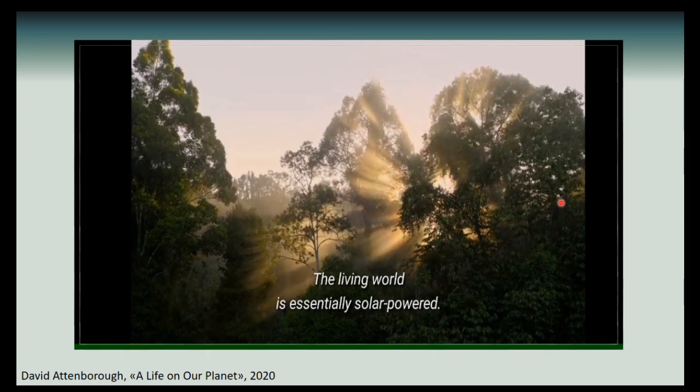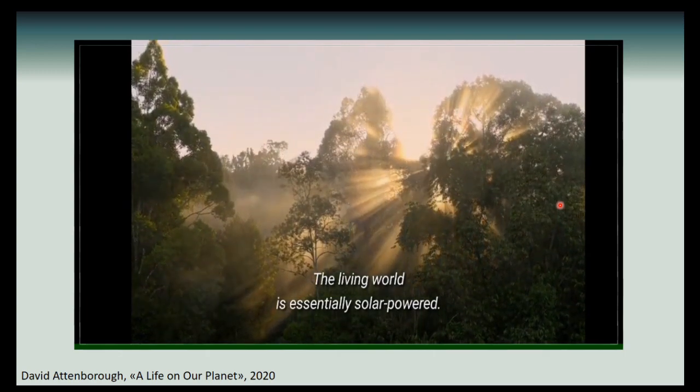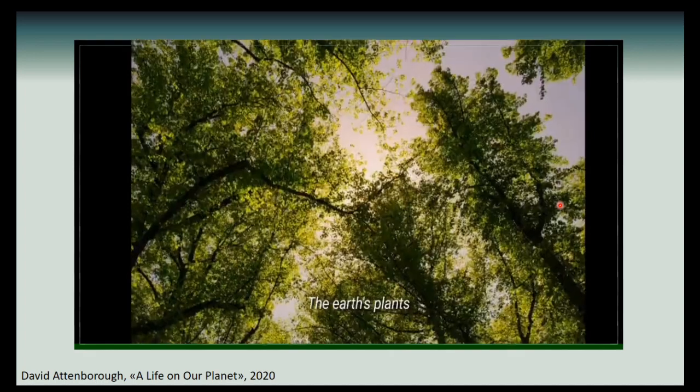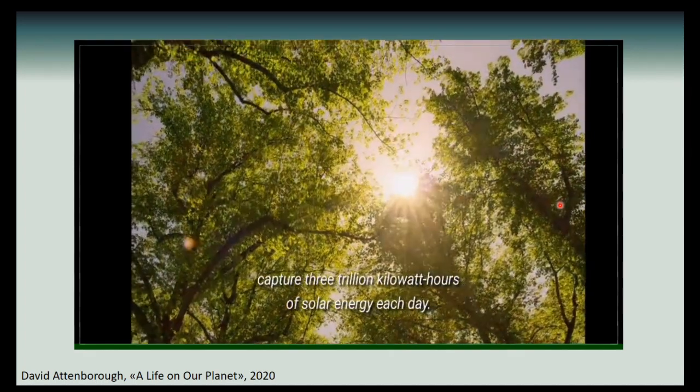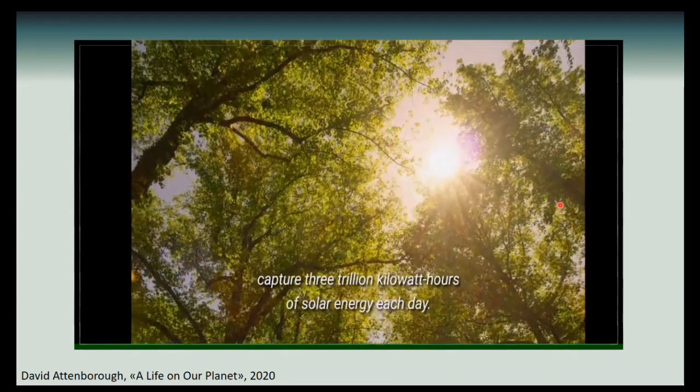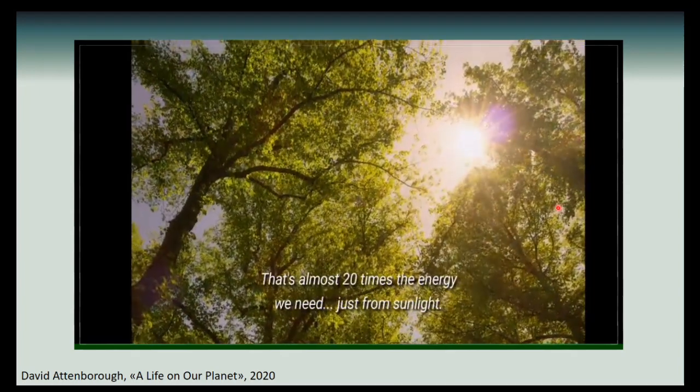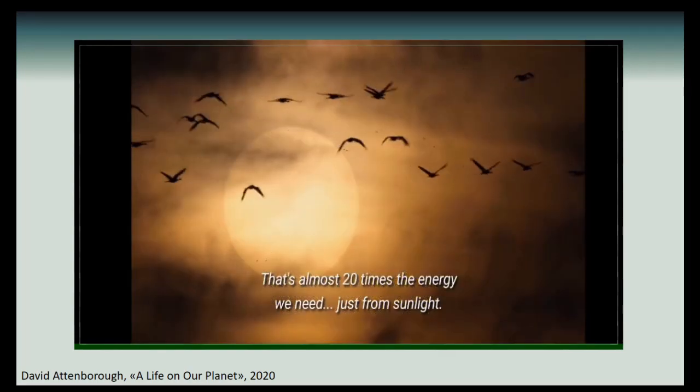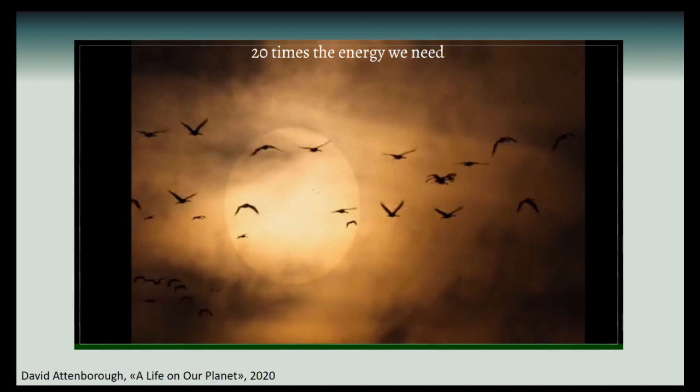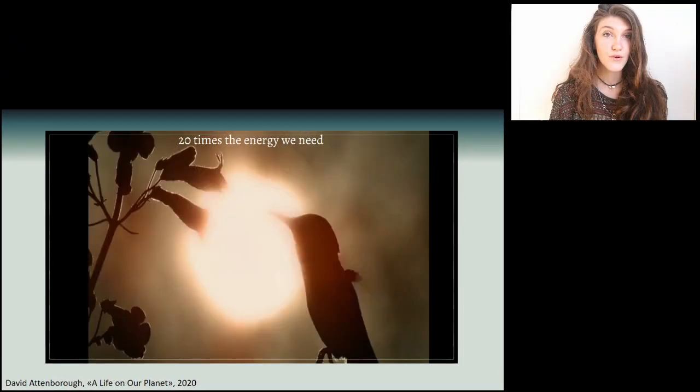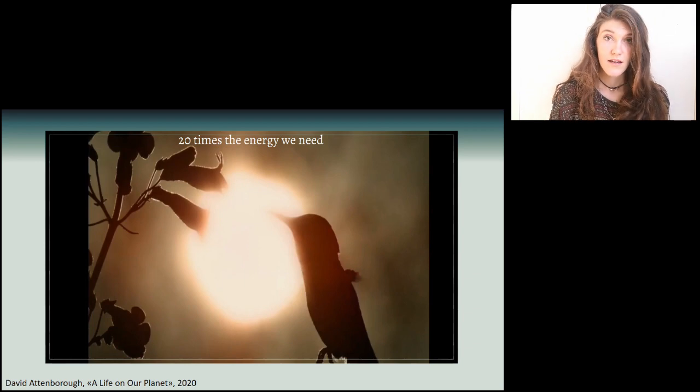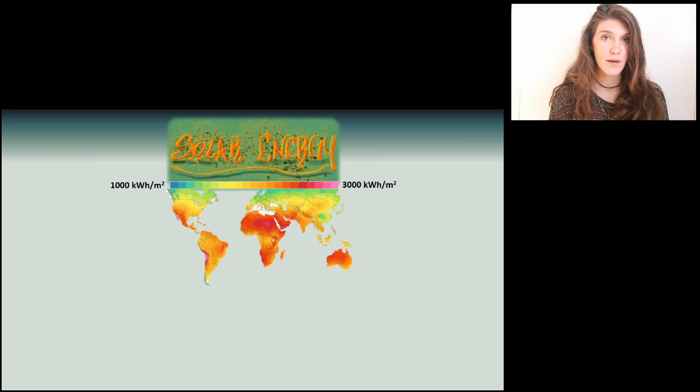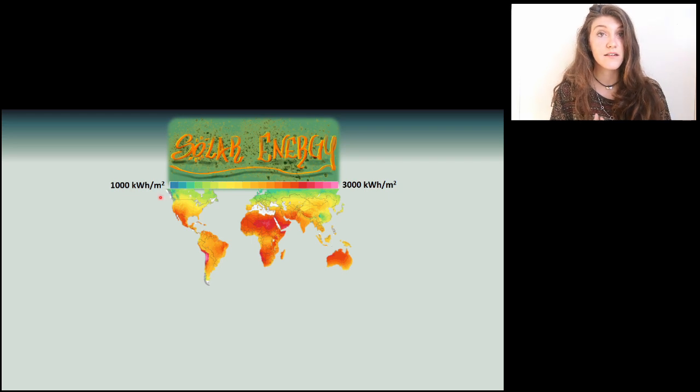The living world is essentially solar powered. The Earth's plants capture 3 trillion kilowatt hours of solar energy each day. That's almost 20 times the energy we need just from sunlight. So 20 times the energy we need just from sunlight. If we give a look at the radiation map on the surface of our planet, we can see that there are places ranging from 1000 until 3000 kilowatt hour per meter square solar power.